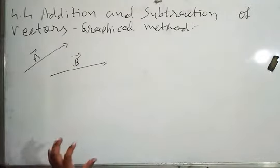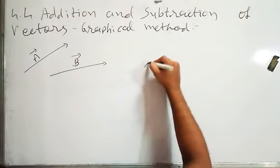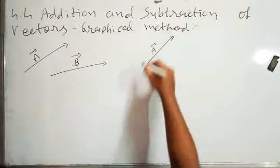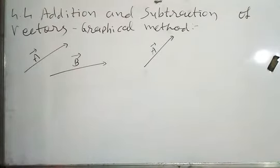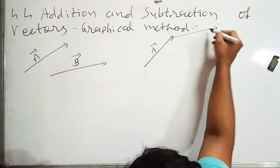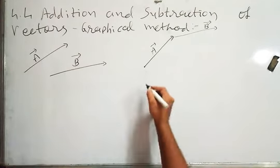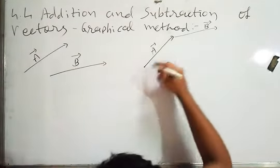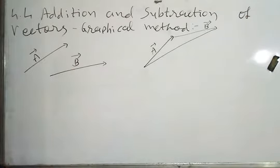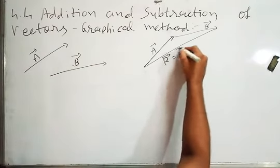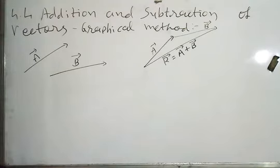To add these two vectors, first draw vector A as it is in the same direction. Now I have to put vector B on the head of A. If I put B on the head of A, then B will become like this. Now from the tail of A, I have to draw another line from A's tail to B's head — like this. So this is the resultant of the addition of vector A and vector B, which equals vector A plus vector B.